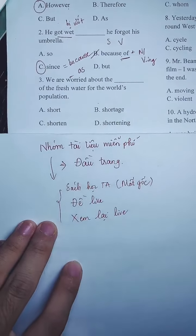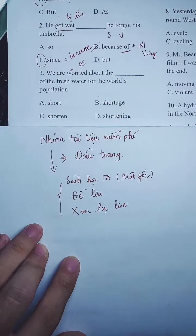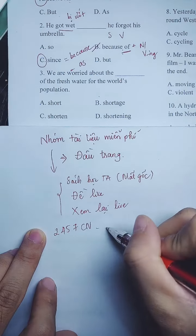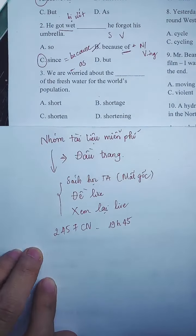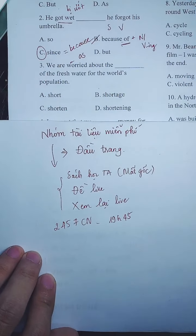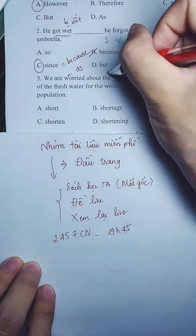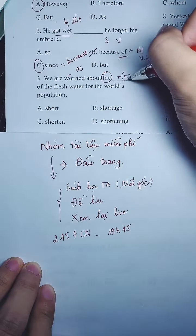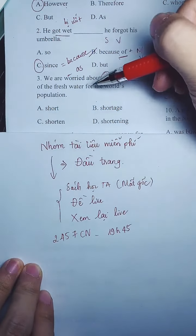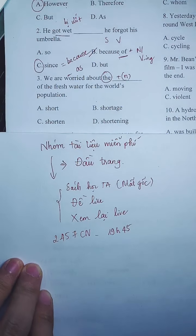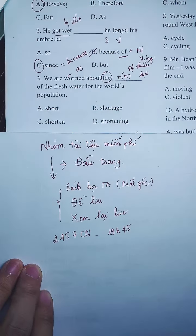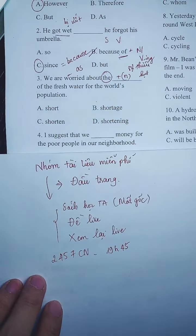Qua câu 3 — câu về từ loại. Bạn sẽ xác định chỗ này cần điền danh từ vì sau mạo từ sẽ là danh từ. Câu này: 'Chúng tôi lo lắng về sự thiếu hụt nước sạch cho dân số toàn thế giới.' Bây giờ mình cần 'sự thiếu hụt'. Đáp án là B — đúng rồi.